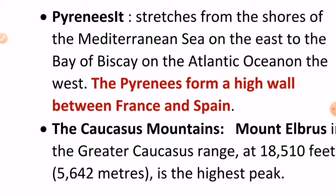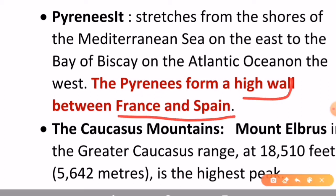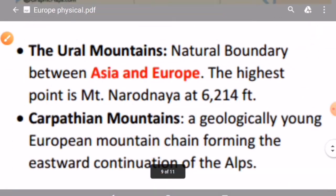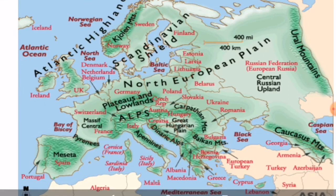The Pyrenees stretch from the Mediterranean Sea on the east to the Bay of Biscay on the Atlantic Ocean on the west. The Pyrenees form a high wall between France and Spain — this is again very important. Questions asking which mountains form the natural boundary between these countries are very common. You can see on the map that the Pyrenees form the boundary between Spain and France.